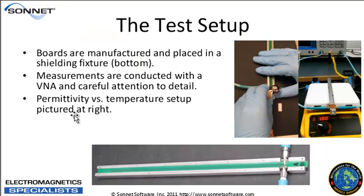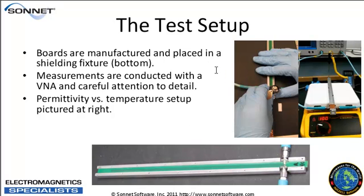This is what the test setup looks like. We build a coupled line resonator and test it in a metal fixture. As you may be aware, Sonnet simulates in a shielded box, so this is our shielded box. We hook it up to a network analyzer, measure it, use calibration data from simulation, and extract permittivity. We can also test versus temperature using a hot plate and thermocouple setup.